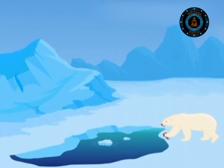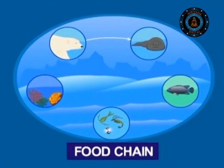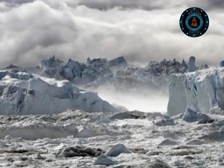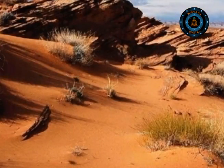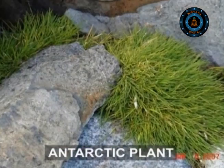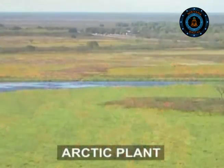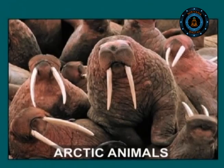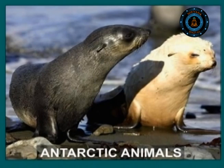Just like in any other biome, all the living organisms in the polar biome too depend on each other for survival, thus forming a food chain. The flora and fauna of any biome along with their physical environment form an ecosystem of that particular biome. Thus, the plants and animals along with other living organisms living in the snow and ice-covered region of the poles form the ecosystem of the Arctic and Antarctic.